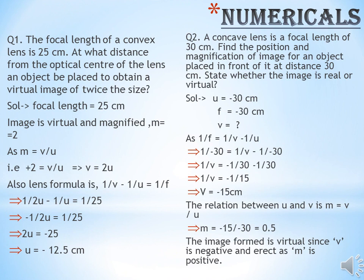Now, based on the concepts we have learnt, we are going to apply them in the form of numericals. The first numerical: the focal length of a convex lens is 25 cm, and since it is a convex lens, the focal length is positive. The image is virtual and magnified, so M is plus 2. Since M equals V/U, substituting gives V equal to 2U. Using the lens formula 1/V minus 1/U equals 1/F, and substituting with sign conventions, we get 1/(2U) minus 1/U equals 1/25. Rearranging the terms, we get U equal to minus 12.5 cm.